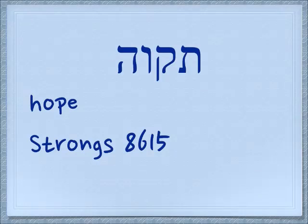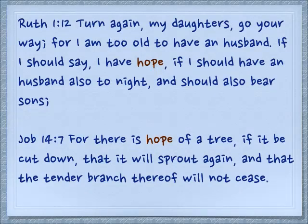Tav can also be a prefix for a noun, and this is the word you know for hope — 'tikva.' Ruth 1:12 — 'Turn again my daughters, go your way, for I am too old to have a husband. If I should say I have hope, if I should have a husband also tonight, and should also bear sons' — and she asked the girls, would you wait for them to grow up so they can be your husbands?